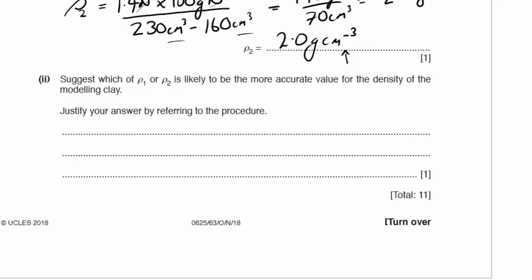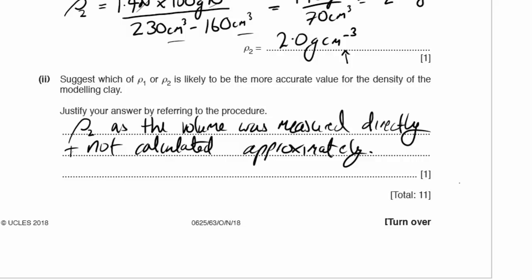Part F2: suggest which of ρ1 or ρ2 is likely to be the more accurate density value and justify with reference to the procedure. Density 2 is more accurate because the volume was measured directly by water displacement rather than calculated approximately from imprecise dimension measurements of an irregularly shaped block.